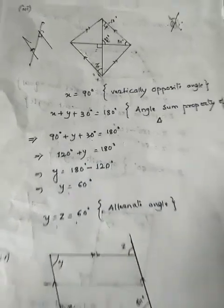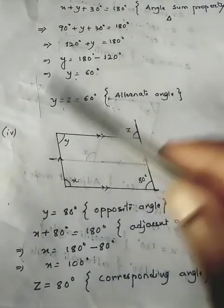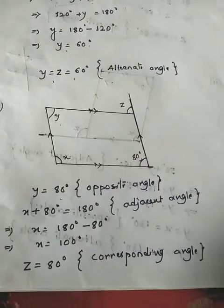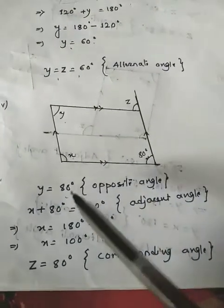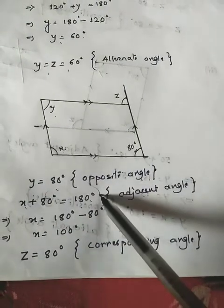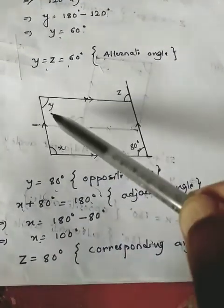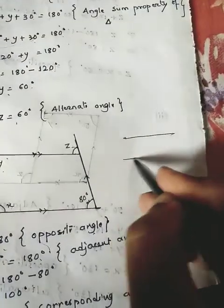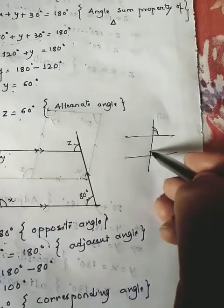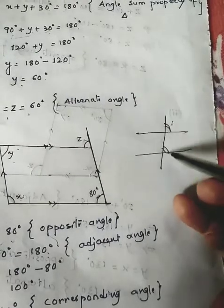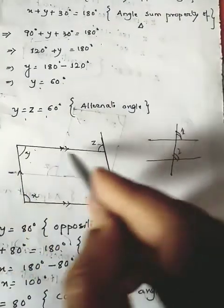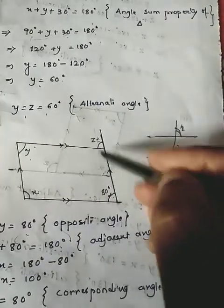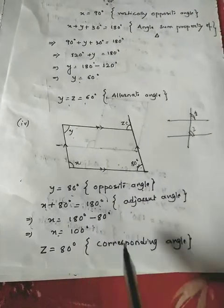For figure four, 80 degrees is given. y is opposite to 80 degrees, so y equals 80 degrees — reason: opposite angles of a parallelogram are equal. x is adjacent to 80 degrees, so x plus 80 equals 180 degrees; transposing gives x equals 100 degrees. For z: the two parallel sides with a transversal create corresponding angles, so z equals 80 degrees — reason: corresponding angles.